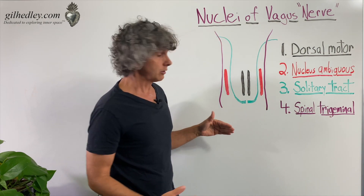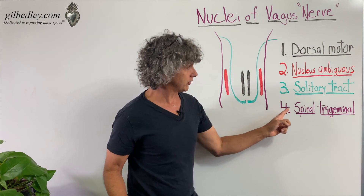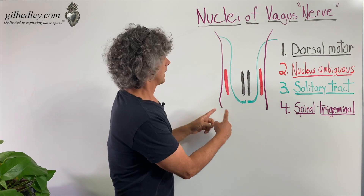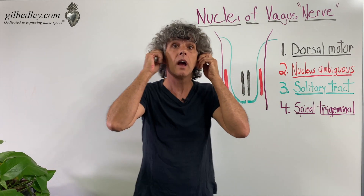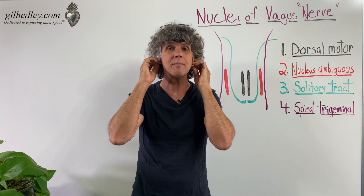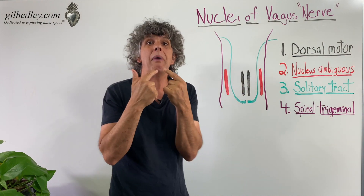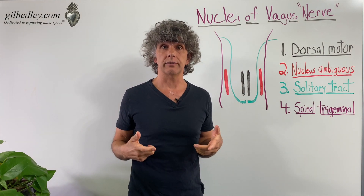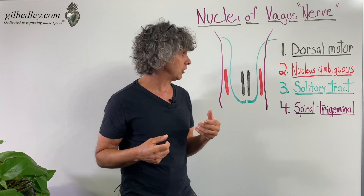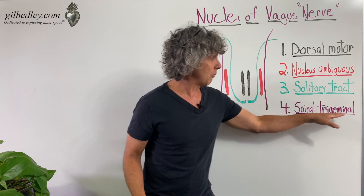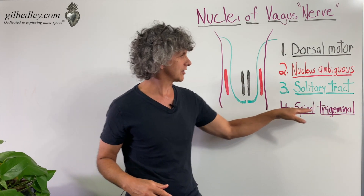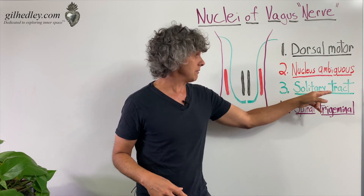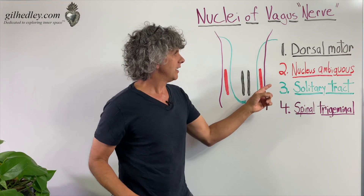And finally, the spinal trigeminal nucleus — the tractus spinalis of the trigeminal nerve. That is actually little afferent fibers coming from your ears and the back of your tongue and your epiglottis, sending sensory information from those places via the vagus nerve. So that's a kind of minor contributor to the vagus bundle, while the solitary tract is a major contributor from your organs in general.